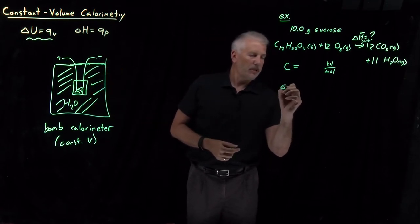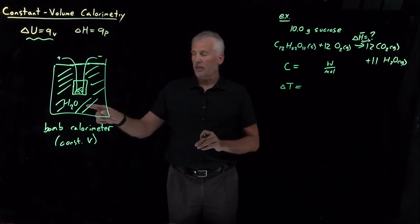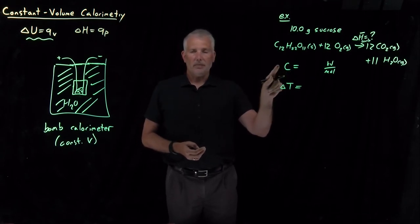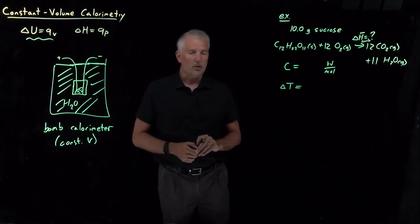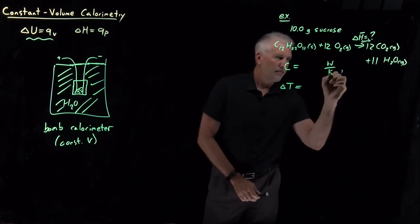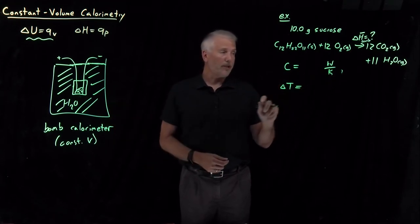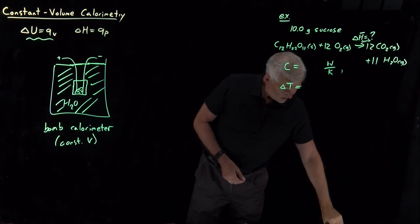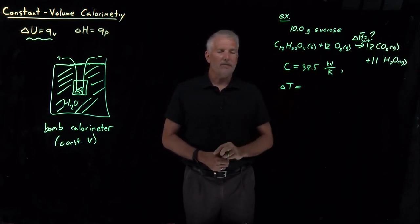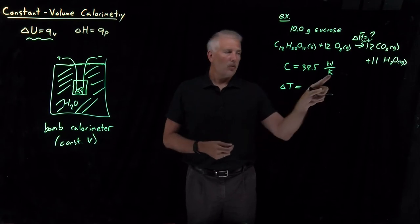The thing that raises in temperature, in a minute I'm going to tell you how much the temperature increased when I burned sucrose in oxygen. The thing that increased in temperature was not just the water, but also the container and the wires and all the other apparatus. So the heat capacity is not the heat capacity of water, it's the heat capacity of the entire apparatus. From doing experiments you can measure how much heat it takes to raise the temperature of the device filled with water by some amount. In this case, we've measured the heat capacity of this bomb calorimeter to be 38.5 kilojoules per Kelvin.